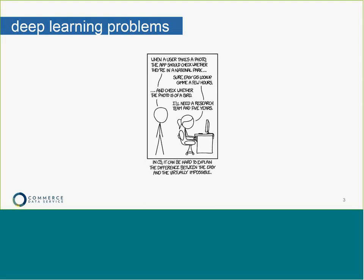Deep learning falls within the realm of artificial intelligence, and one of the true challenges coming out of AI is solving tasks that are really easy for people to perform but hard to describe in a formal manner — problems we answer intuitively that feel really automatic, like understanding spoken words or finding a face in an image, but it's really hard to describe how you do it.